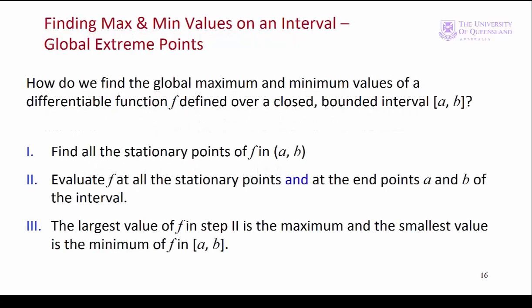So how do we find global extreme points? This is the general procedure in three steps. First, we find all the interior stationary points of the function in the interval a, b. Then we evaluate the function at all the stationary points and at the endpoints a and b of the interval. The largest value of f is the maximum and the smallest value of f is the minimum.